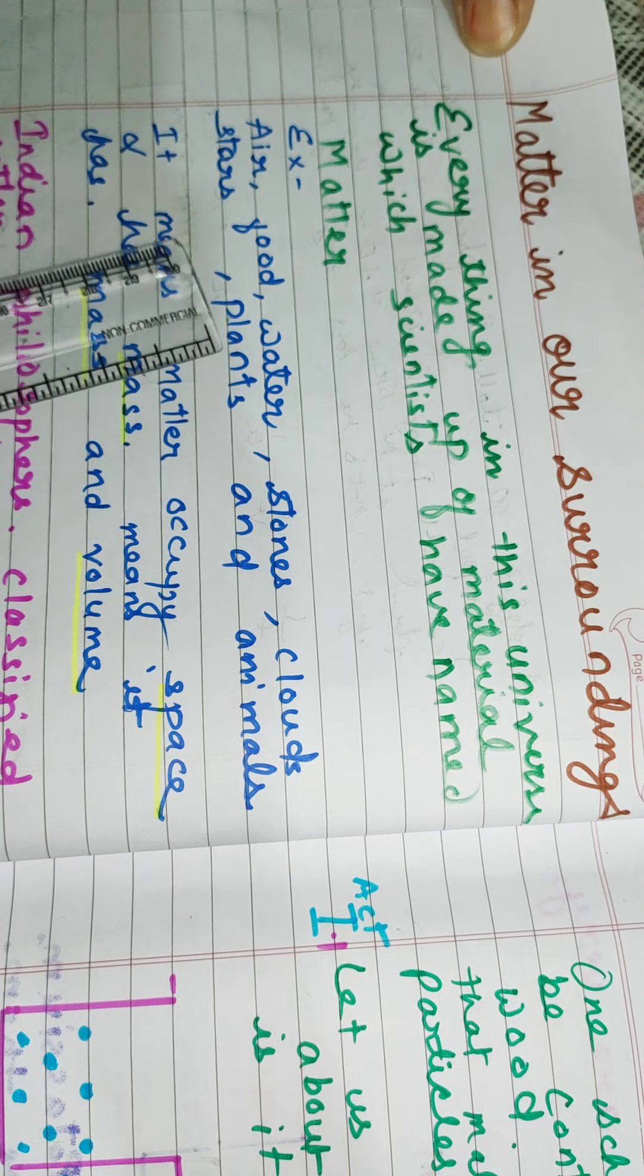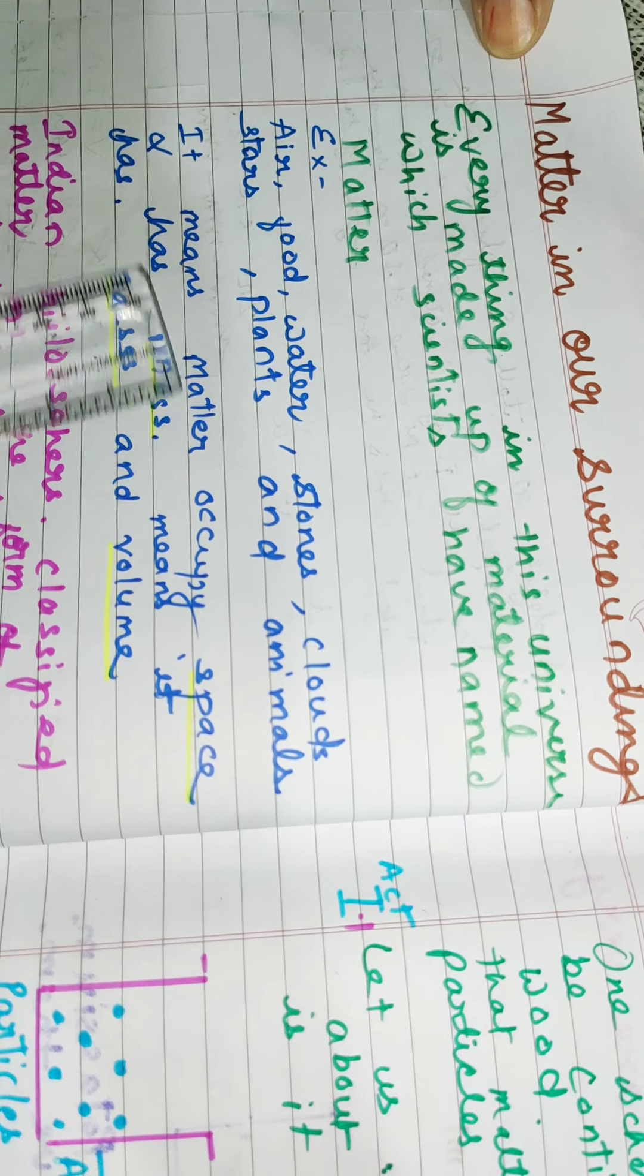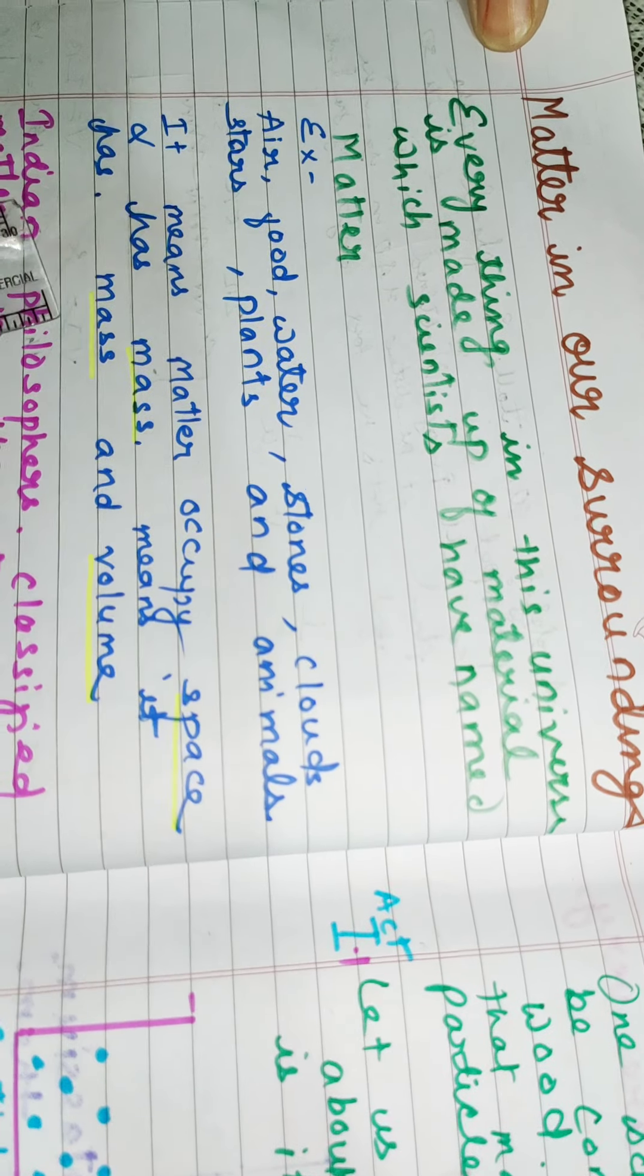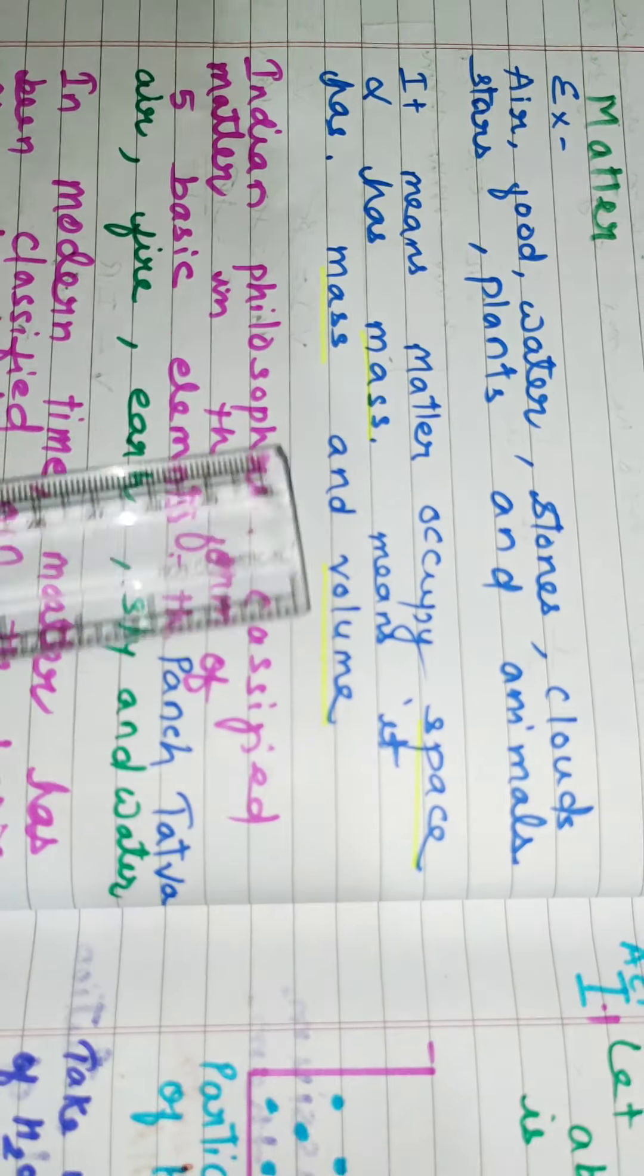Everything in this universe is made up of material which scientists have named matter. Examples include air, food, water, stone, clouds, stars, plants and animals. It means matter occupies space and has mass.